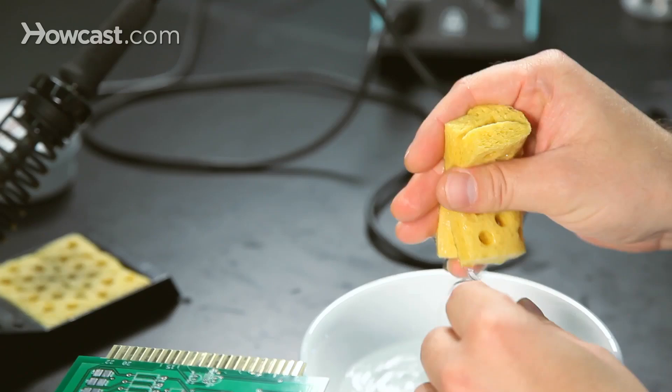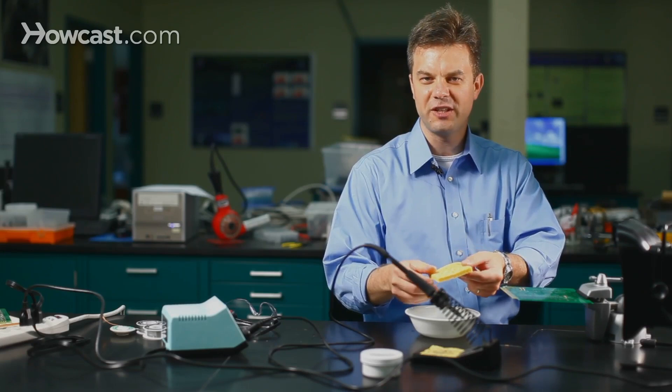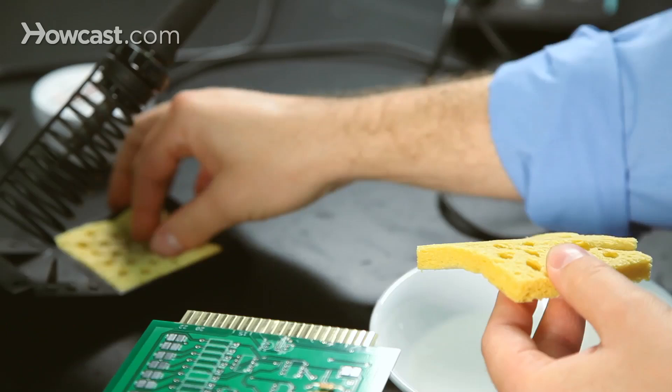We don't really want it saturated like this. It's kind of too swampy, if you will. We want to get it a little bit drier, so we give it a wring, but not too dry. Just enough to leave a little bit of moisture when you squeeze it. Just like that, and that's perfect.